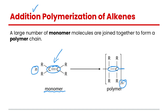It's really important to note that the R groups are not affected. They are basically becoming the branches on your polymer chain, and it's just this carbon-carbon double bond that's reacting — the bonds are breaking, creating single bonds and creating a polymer chain.